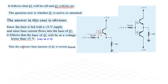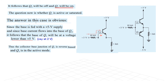The collector-base junction of Q1 is reverse biased. The base-emitter junction is forward biased — positive going to ground. But the collector-base junction: 5V here and 2V here, therefore this junction is reverse biased. We know that when a transistor has base-emitter forward bias and base-collector reverse bias, then the transistor is in active mode. So we can conclude that Q1 is in active mode.